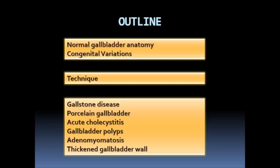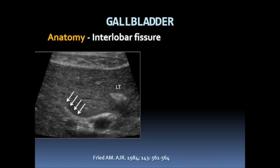As it pertains to the sonographic evaluation of the gallbladder, today I'd like to discuss normal gallbladder anatomy, congenital variations in the gallbladder, emphasize gallbladder ultrasound evaluation technique, and then review basic gallbladder disease entities, including gallstone disease, porcelain gallbladder, acute cholecystitis, gallbladder polyps, adenomyomatosis, and the thickened gallbladder wall.